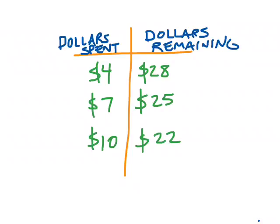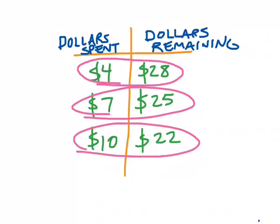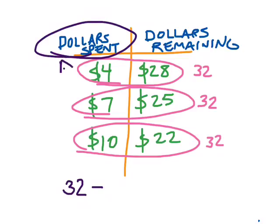Having a good understanding of the scenario can help figure out the pattern, because this one would be tricky with just the numbers and no context. One thing I'm noticing is that if I look at the pairs — four and twenty-eight, seven and twenty-five, ten and twenty-two — if I add them together, they all make thirty-two. Seven plus twenty-five is thirty-two, ten plus twenty-two is thirty-two. That makes me think this person started out with thirty-two dollars. So I'll write the variable expression: thirty-two minus D, where D is dollars spent.